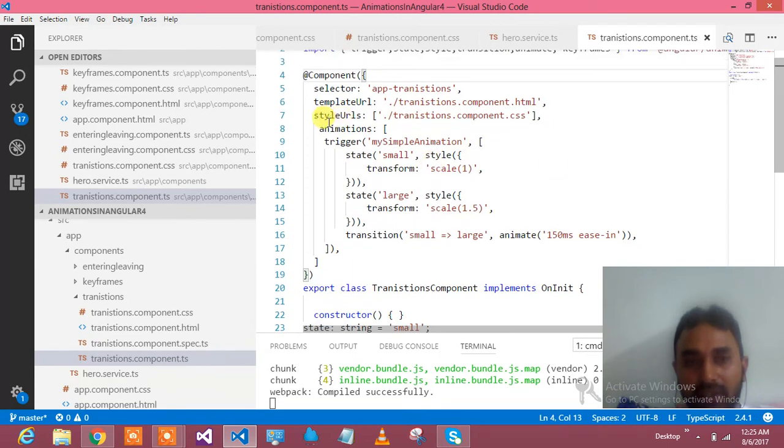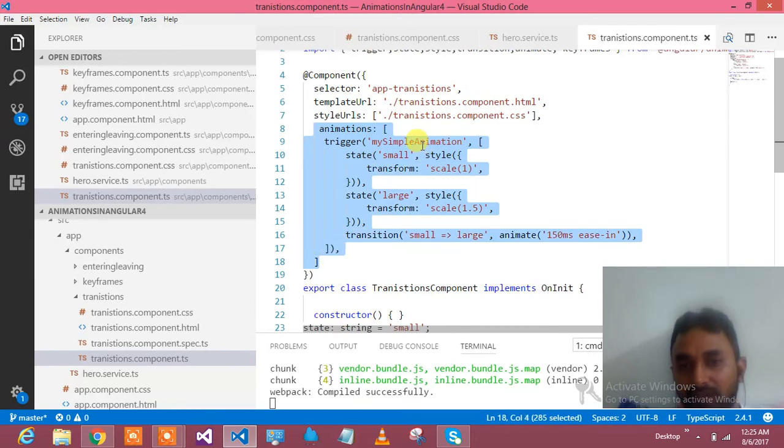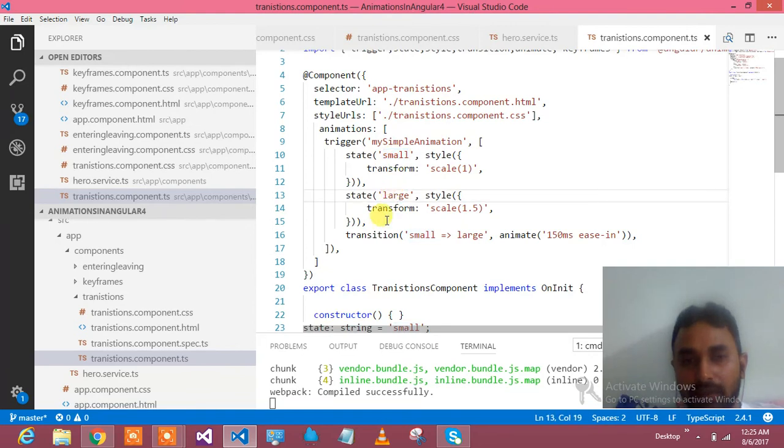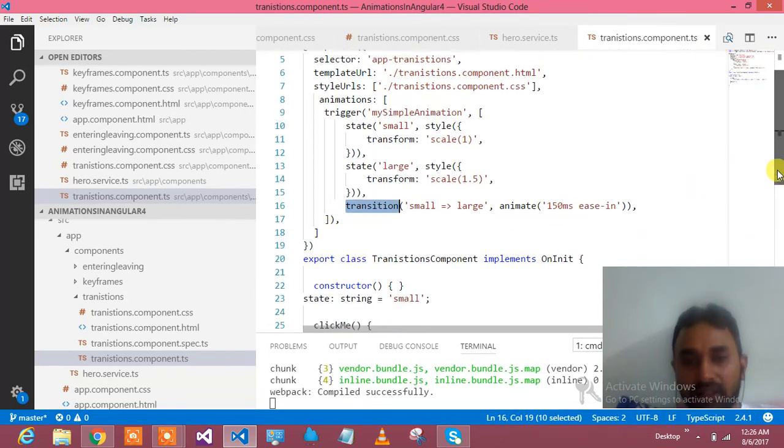So yeah let's see over here. After the styleUrls this is my selector which I am going to use in my html. This is my templateUrl where my html has been written. This is my css url where css file is there. So I am applying some kind of css in particular div and element, that definition is there. This is the important thing, animation from here to there. My simple animation is my trigger name and small and large is having the definition and how it transits from one state to other state and what time it takes and what function it uses. That is over here.